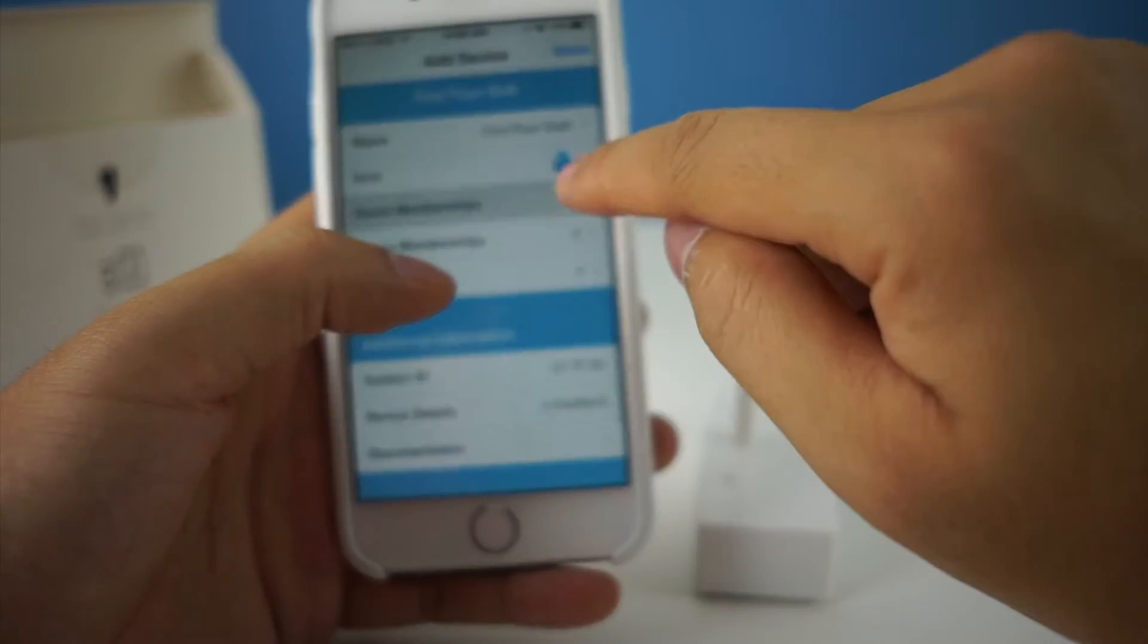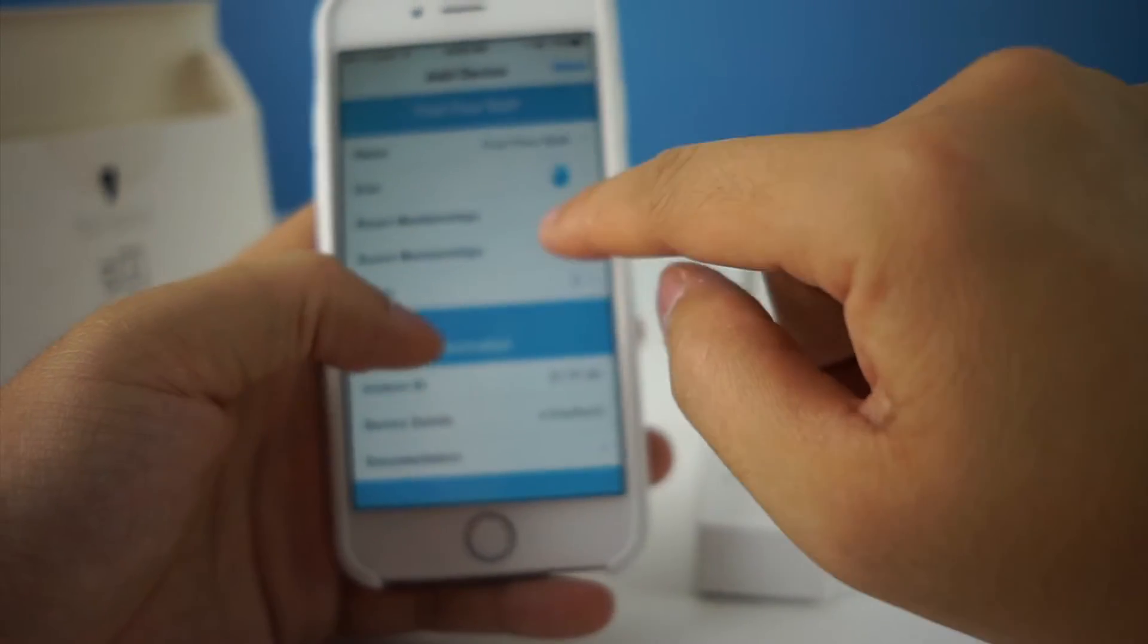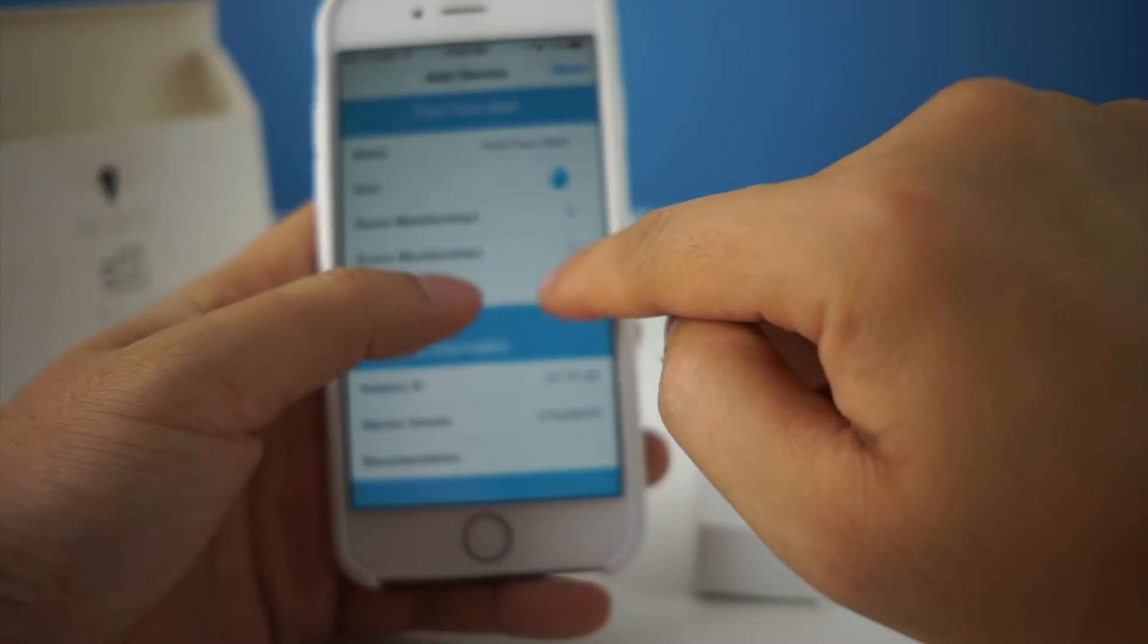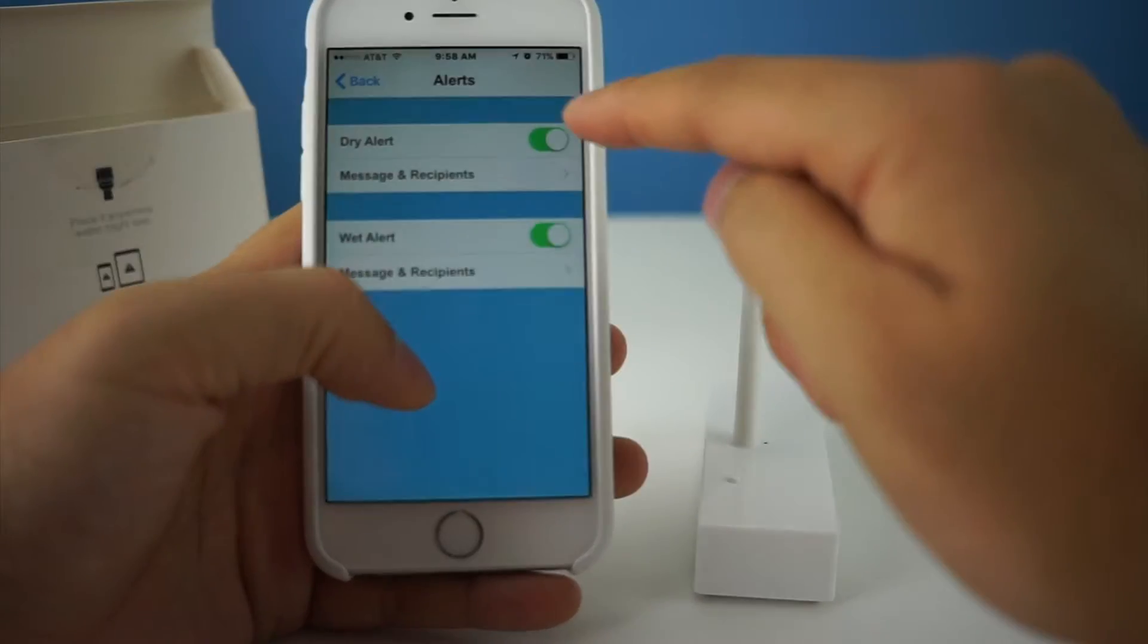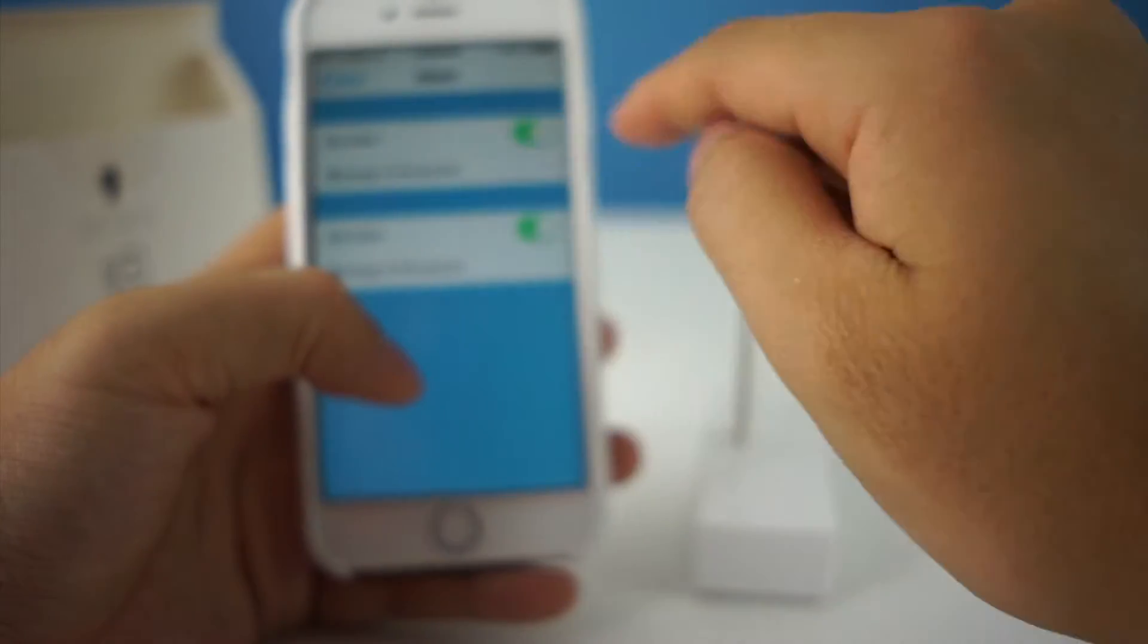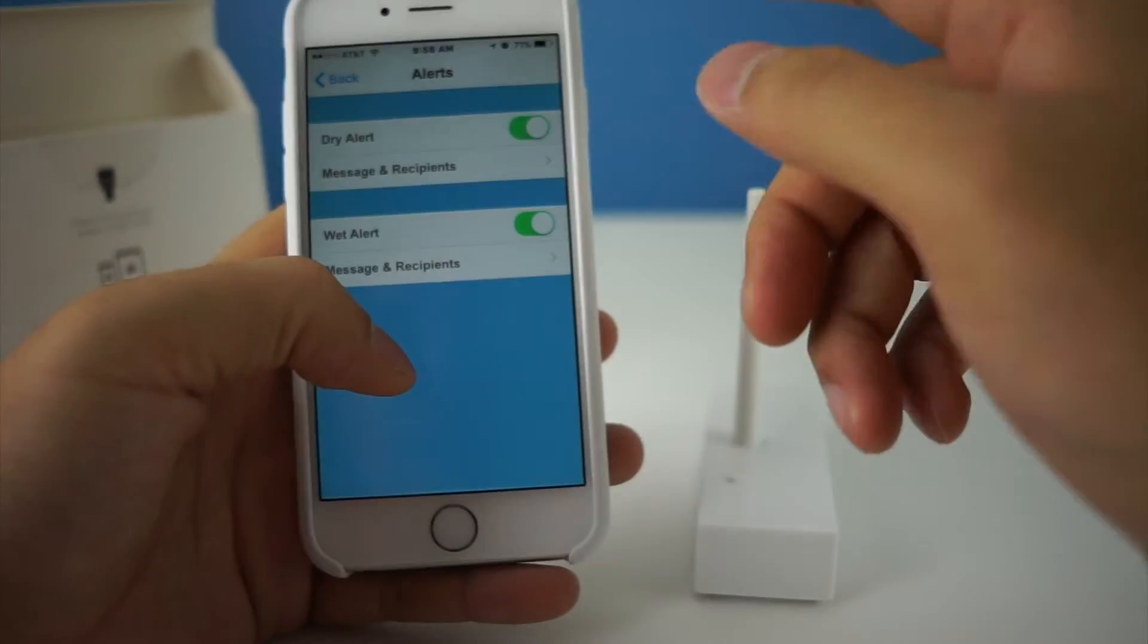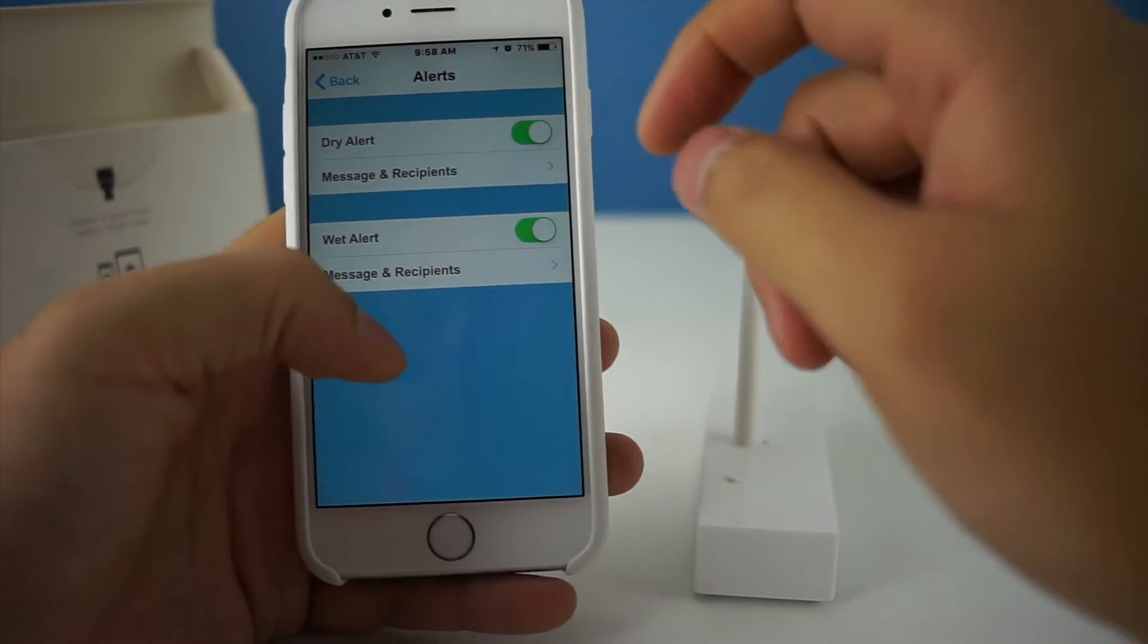Done. I don't want favorite, I don't want it to be in any room membership, scene membership. And alerts - with the alerts you can set it to dry alert and wet alert. If you click into here you can put in the message and the recipient. I won't click into it because it has my email address.